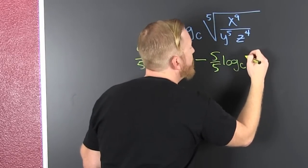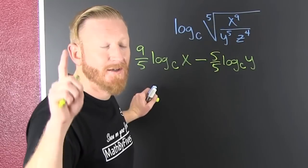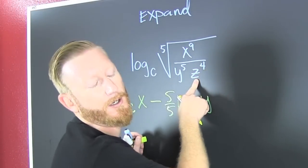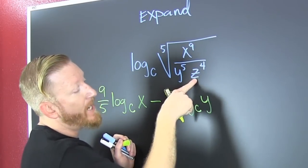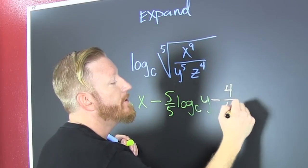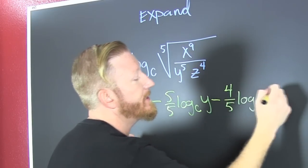Now if you can't see why this is working, do it step by step, day by day. Here I'm looking at z's. Oh no, four is in the numerator. It's a minus because it's in the denominator, so that's minus four over five log base c of z.